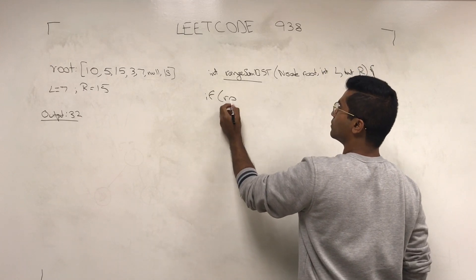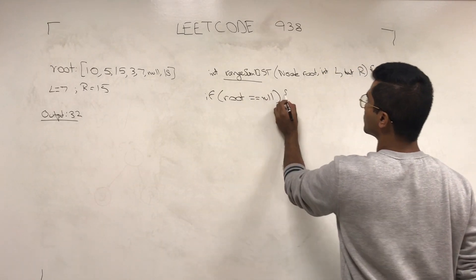The first thing we always do is if root is null, we have to either return or return zero.